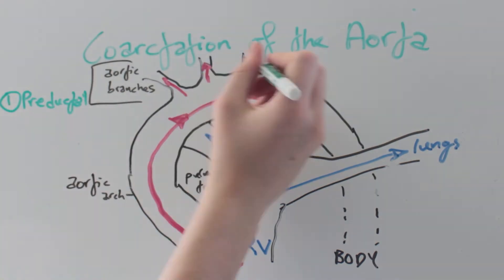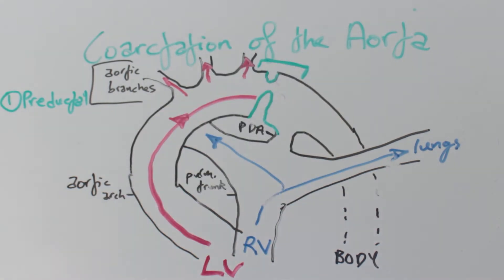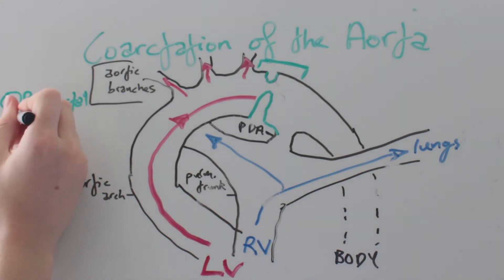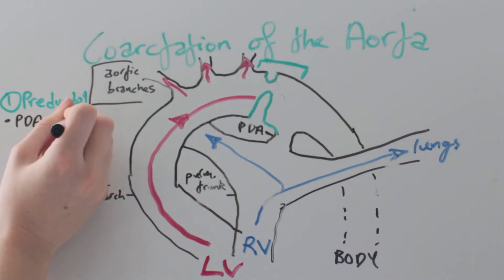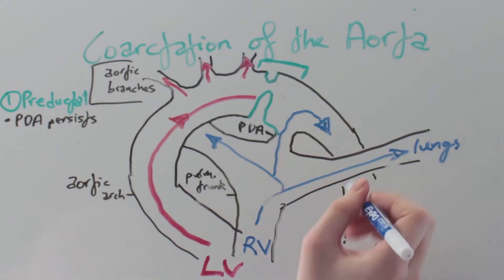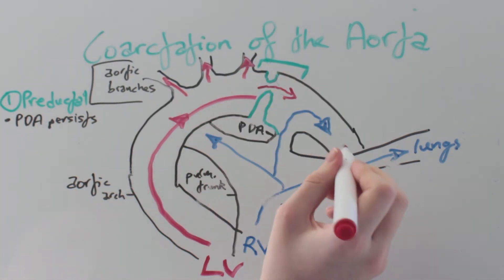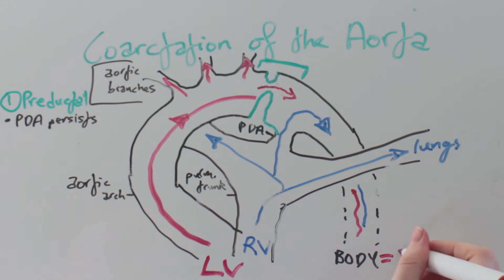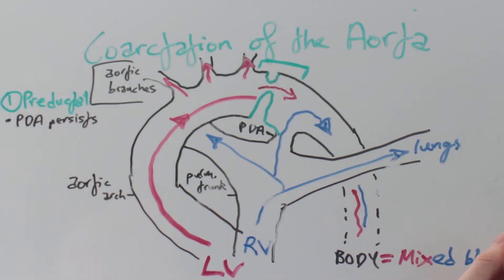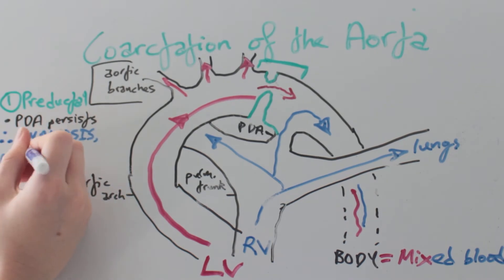There are two types of coarctation. The first is pre-ductal, which occurs proximal to the ductus. In this situation the ductus persists after birth, so we have some deoxygenated blood getting through to the systemic circulation and mixing with a small amount of oxygenated blood which gets through the narrowing. The body below this point gets mixed blood causing cyanosis, particularly in the lower body.